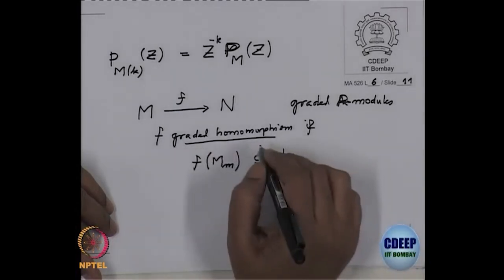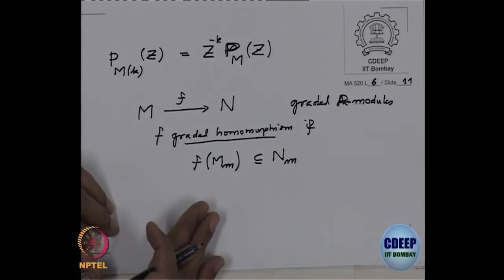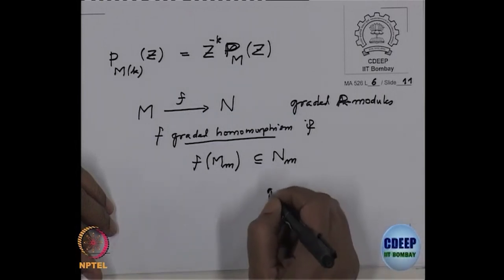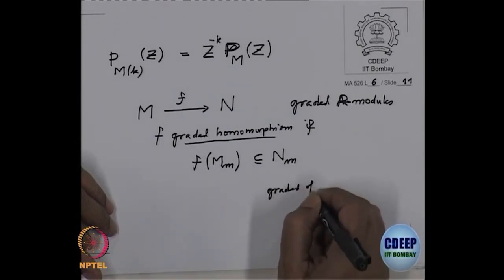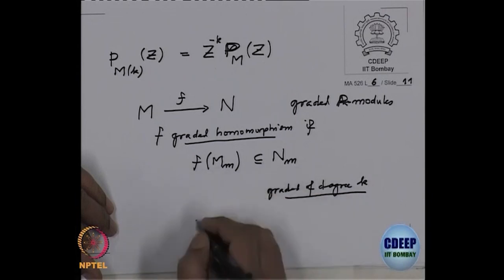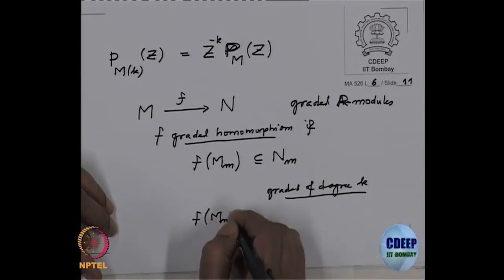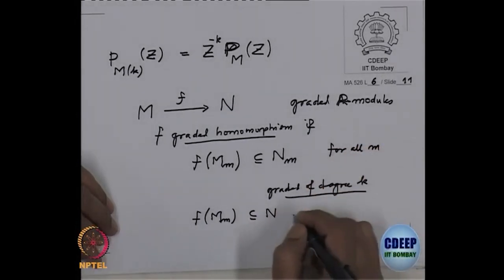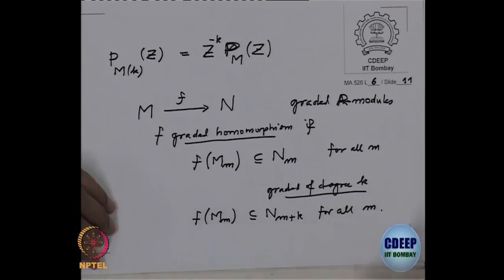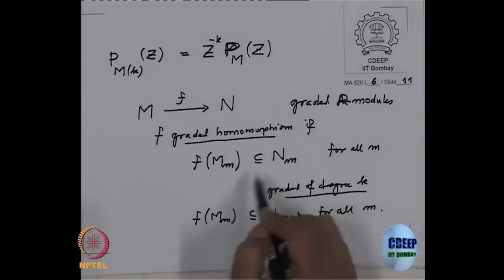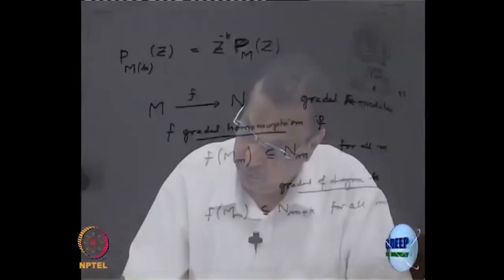If you want degree K, then it need not go in M_m, but it should go in M_{m+K}. So graded of degree K means this should go in M_{m+K} for all m. And if I don't say degree, then that is assumed that degree is 0.